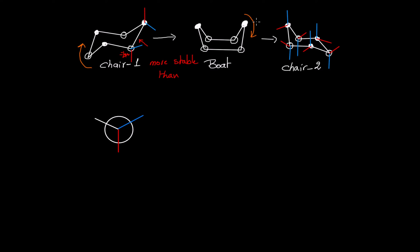On the back carbon, I have the axial pointing up, which is 180 degrees compared to the red axial bond on the front carbon. I have the equatorial also in the opposite direction to the white bond on the front carbon. The white bond goes in the opposite direction to complete the cycle, so here is one CH₂ going to the cycle and another CH₂ continuing the cycle.